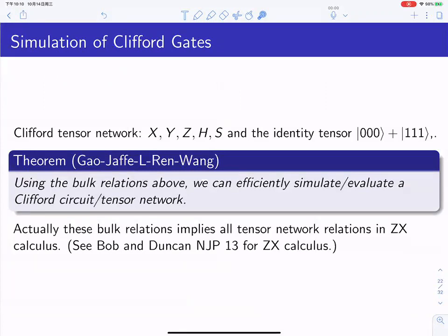In general, the Clifford tensor network is generated by the Pauli X, Y, Z matrices, the Hadamard and S gates, and the identity tensor. In our paper, we show that using those bulk relations, we can efficiently simulate the Clifford tensor network. We proved something stronger: these bulk relations imply all the tensor network relations used in ZX calculus—another very powerful computational tool for tensor networks. Our method is a rationalization of their relations, and most of the algebraic relations become topological isotopies in our framework, so you don't need to remember them—you get them automatically.